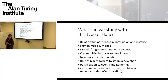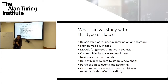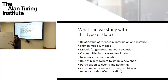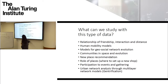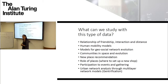What have we done with this type of data? This is a list of works I'm not going to go into detail on, but we could have worked on with the data you just saw, because the data has information about friendship — a social network — and a geographical, spatial, place network. The two are quite powerful. You can look at communities in space, evolution, place recommendation, role of place, participation in events, and human mobility models. If you go to my web page, you will find the relevant papers.